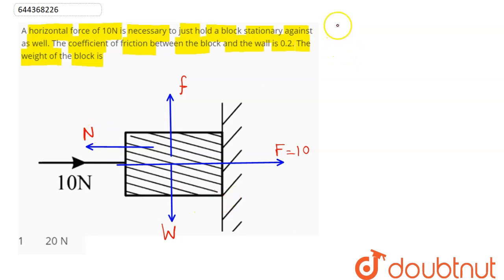So we can say here normal will be equal to the external force, which here is equal to 10 newton. Hence we can say the weight of the body will be equal to friction, which here is equal to mu into normal.